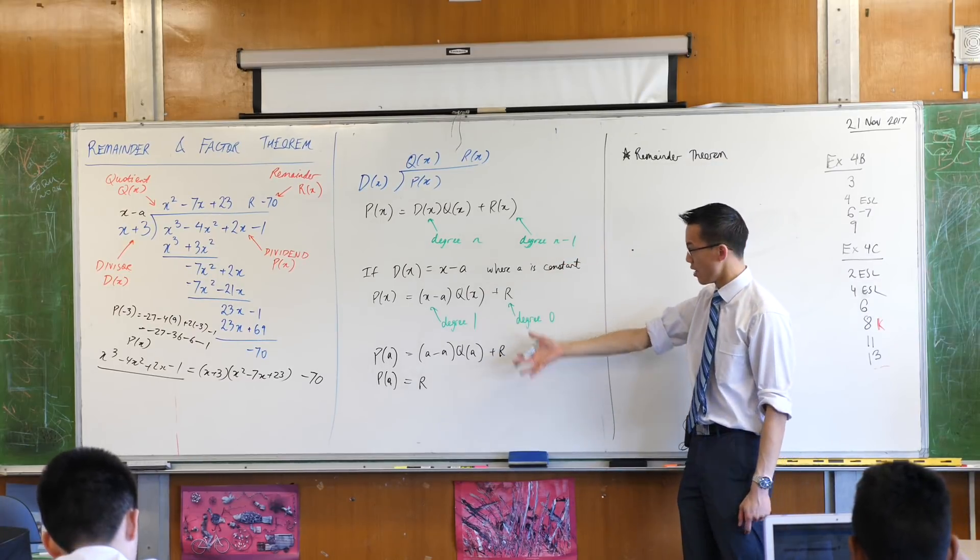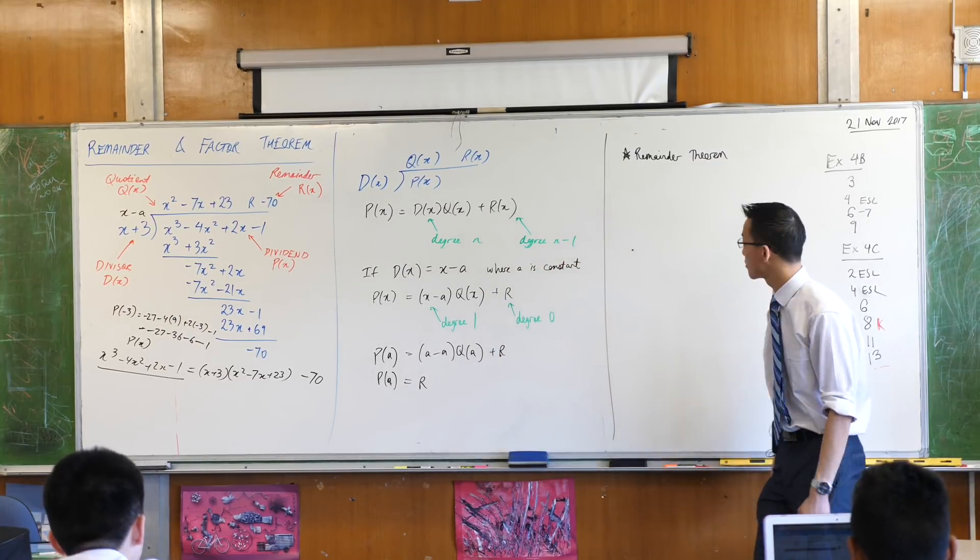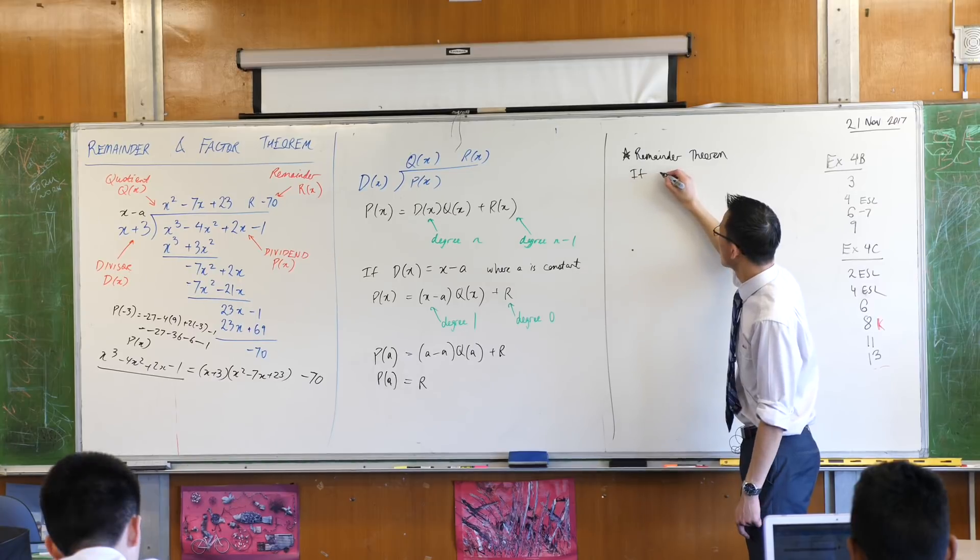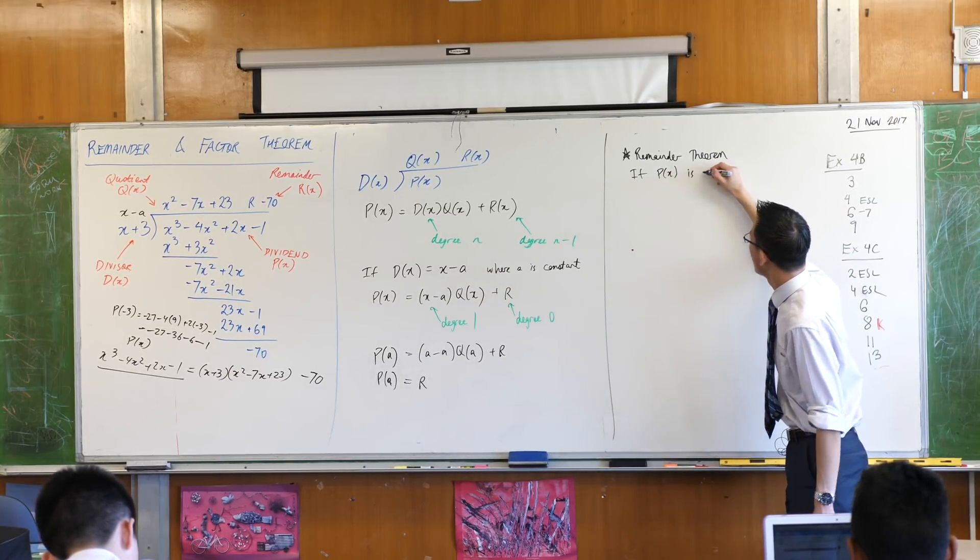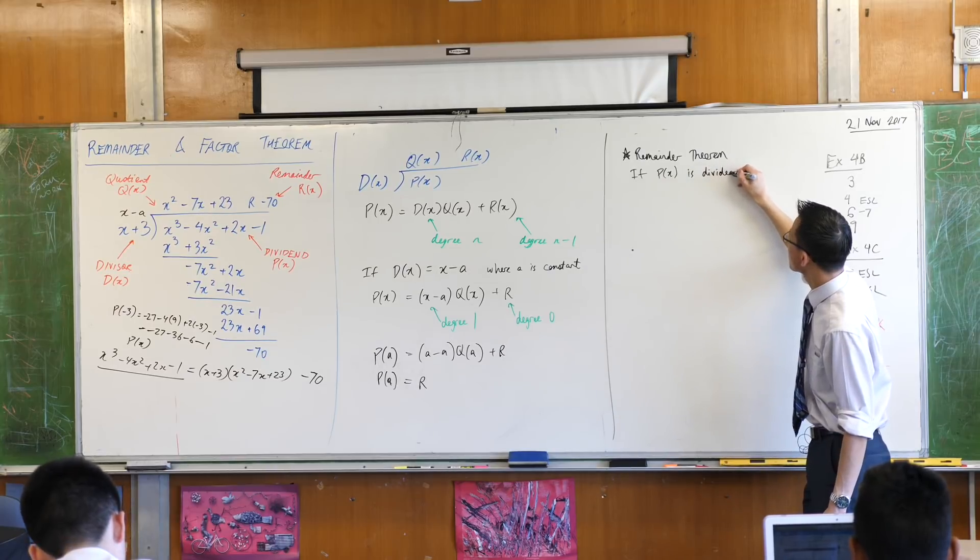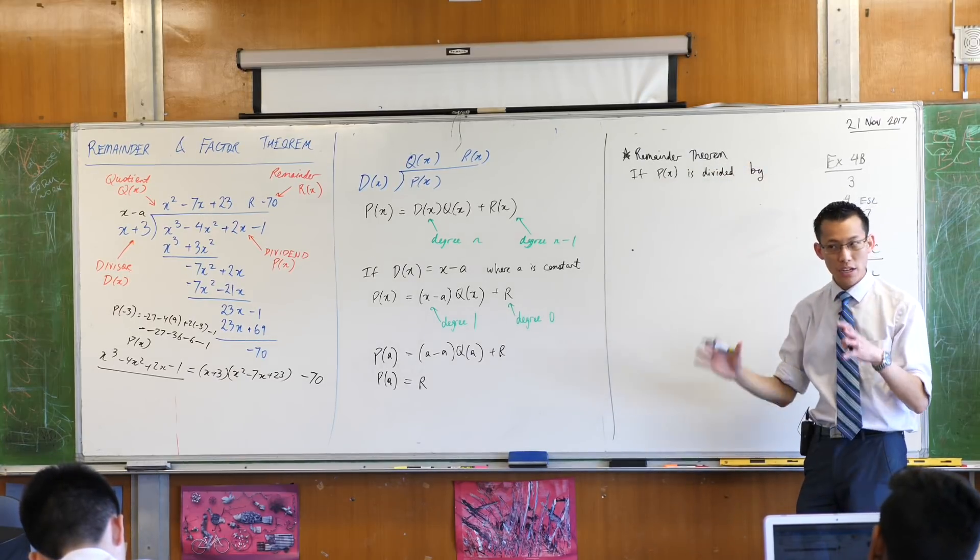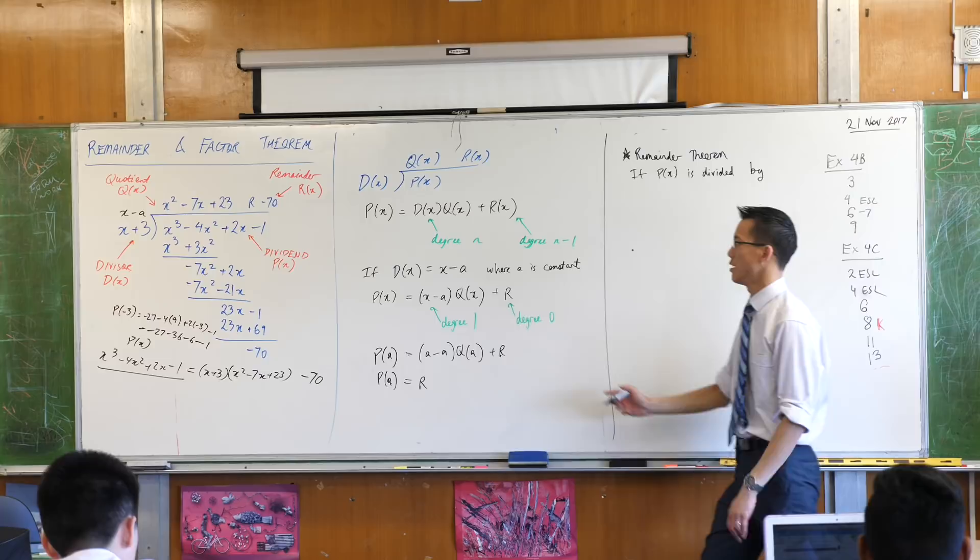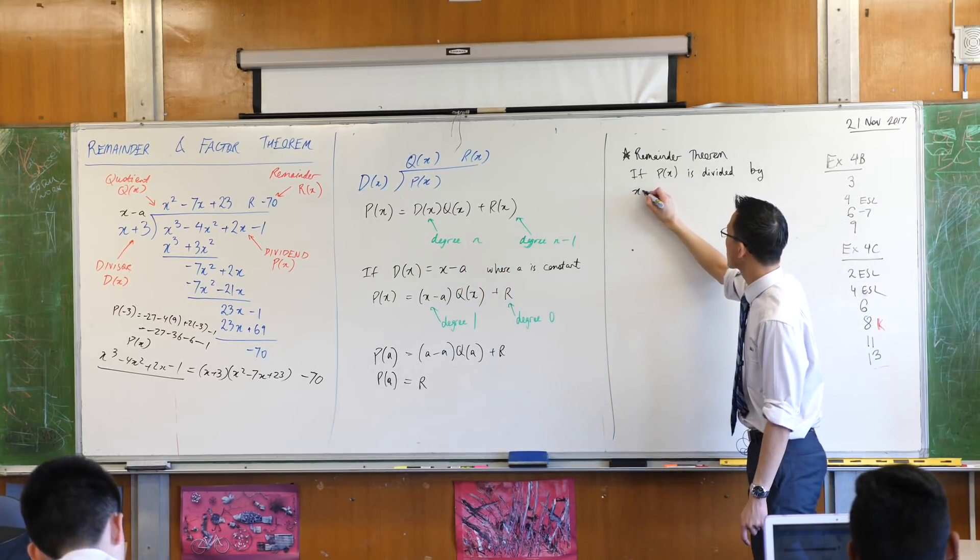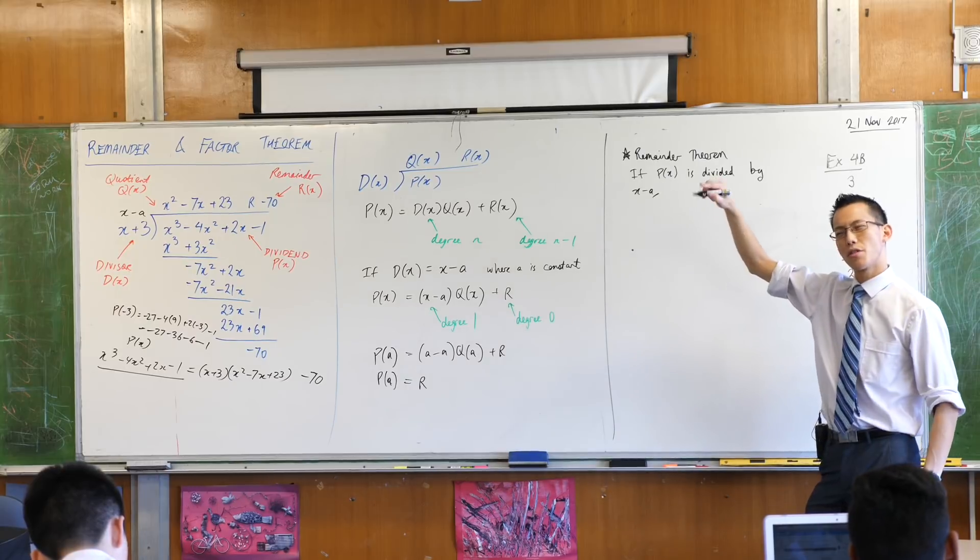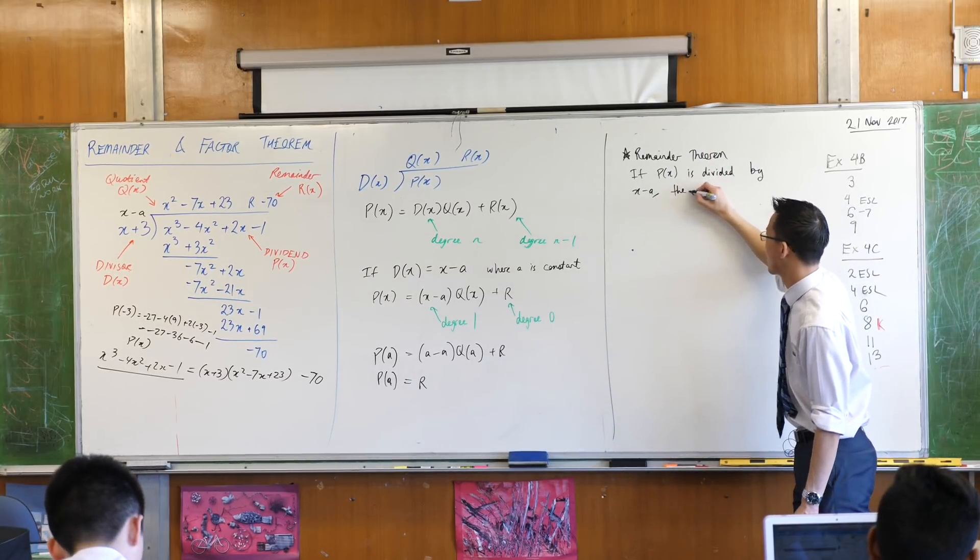I'm going to put into words what we've just shown algebraically. So if P(x), any polynomial you like, is divided by a monic linear divisor, which means x minus a. If that is divided by x minus a, then the remainder theorem states, unsurprisingly...